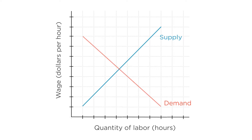The downward sloping demand curve comes from firms maximizing profits by setting marginal revenue product of labor equal to wage. A higher wage means that the firm needs to get a higher marginal revenue product out of its workers, leading firms to hire less labor.